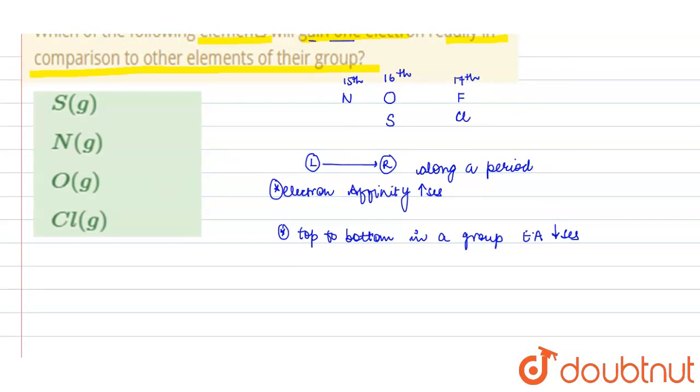So here, see, oxygen, sulfur, nitrogen, and chlorine—these are the elements given in the four options. Here, chlorine has highest electron affinity, highest negative electron affinity in the whole periodic table.